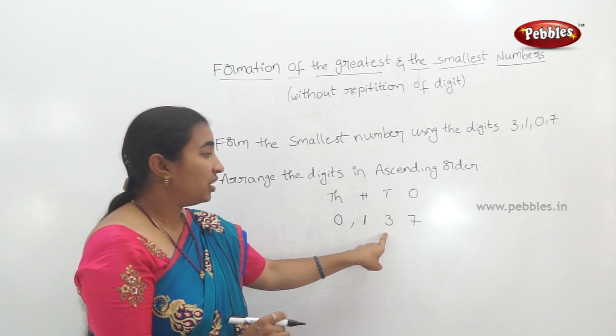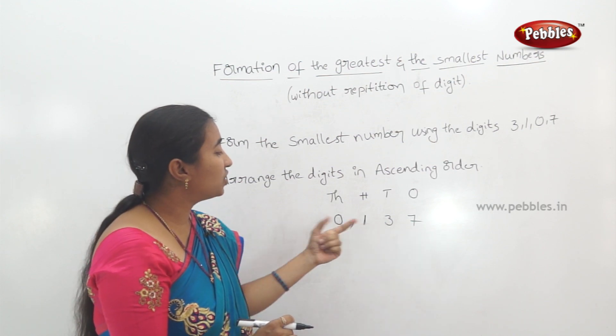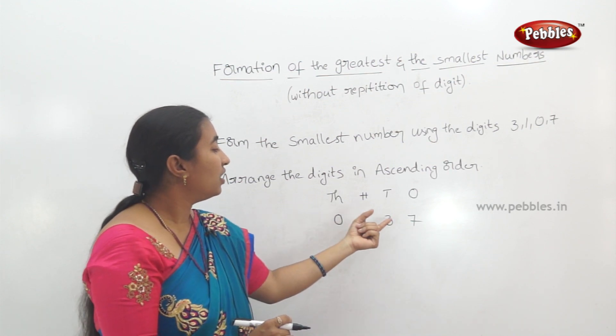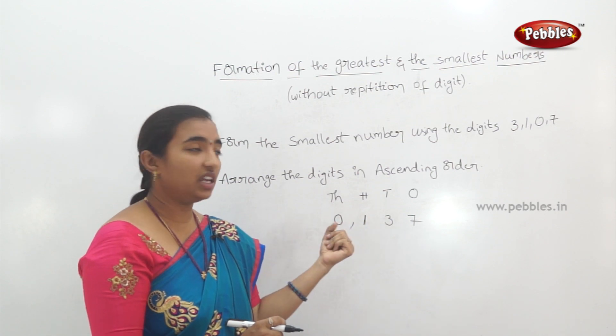But we call it 1,037 — because 0 cannot be placed in the 1000s place.